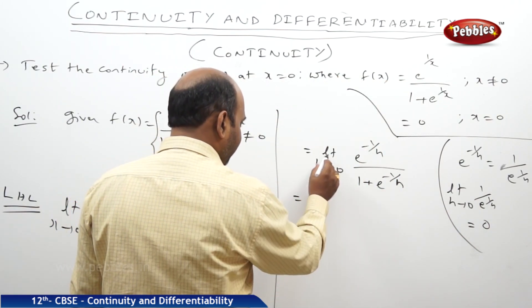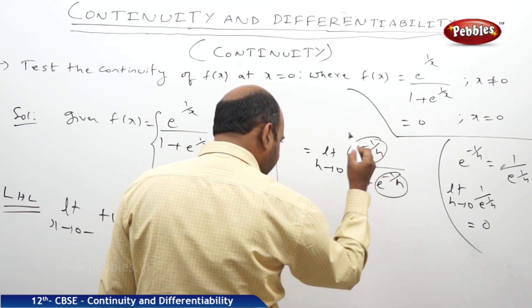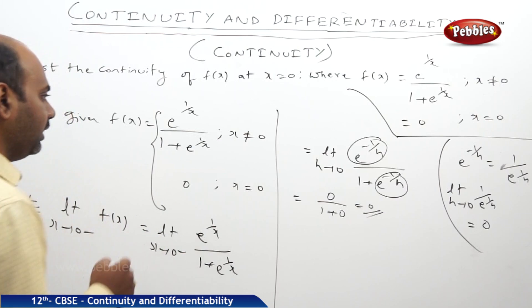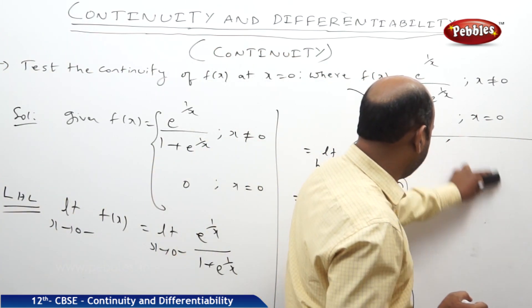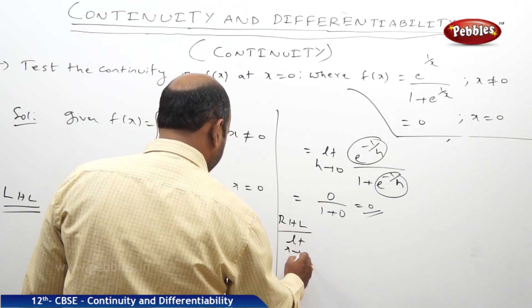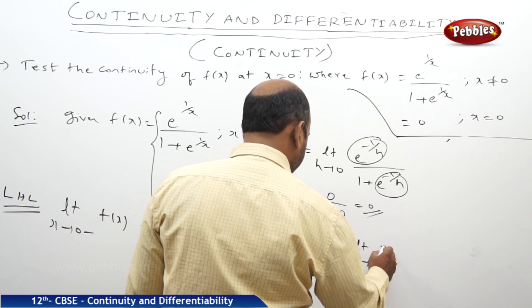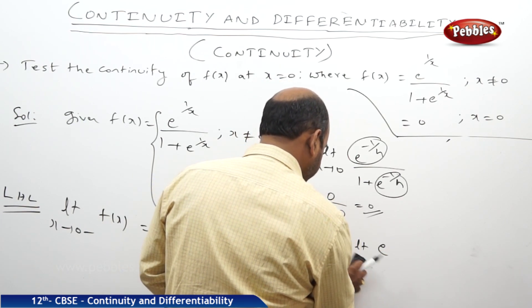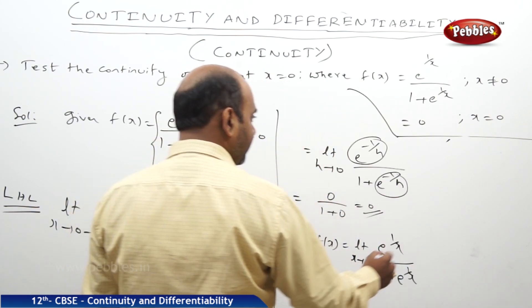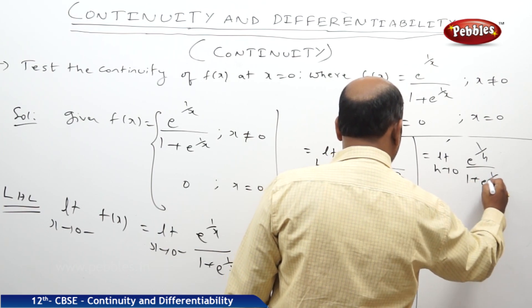So the left-hand limit is 0. Now we need to evaluate the right-hand limit. The right-hand limit is limit x→0⁺ f(x) = limit x→0⁺ of e^(1/x) / (1 + e^(1/x)). This can be rewritten as limit h→0 of e^(1/h) / (1 + e^(1/h)). As h→0, this becomes infinity over infinity.